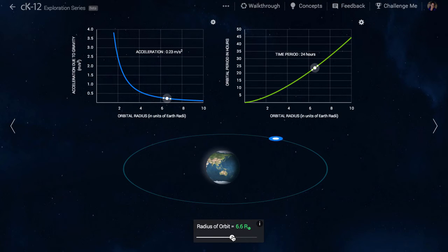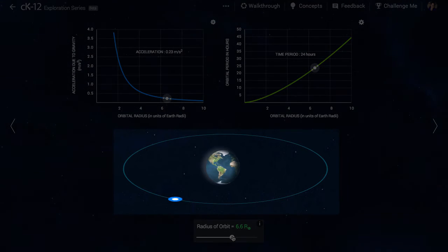As you can see, if we set the orbital radius to 6.6 times the radius of the Earth, its orbital period will be 24 hours. This is known as a geosynchronous orbit. Can you see that the satellite is always above the same point on Earth?